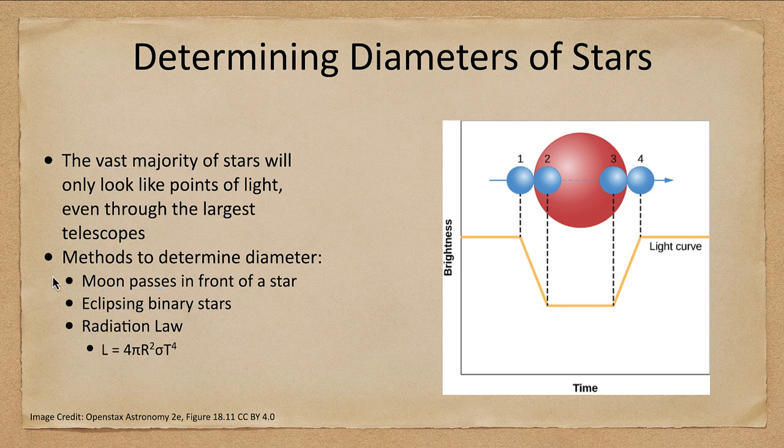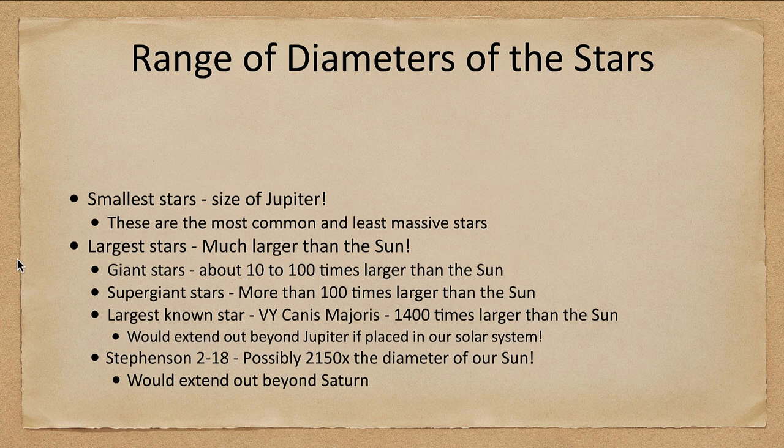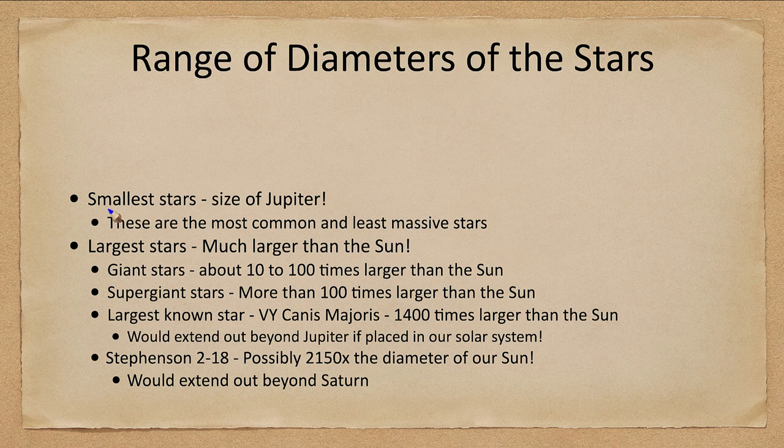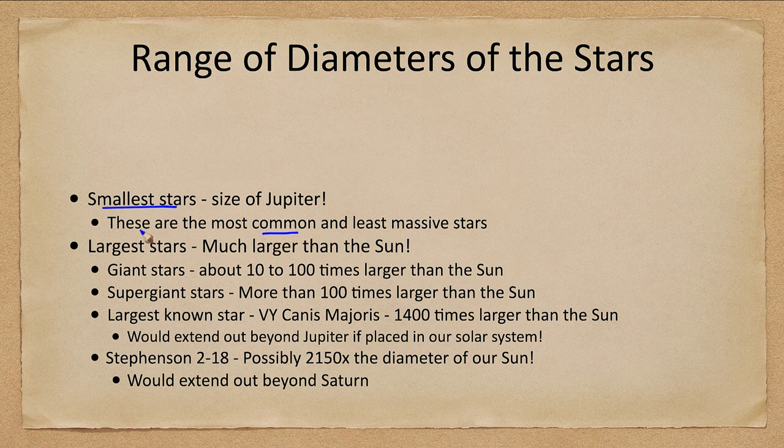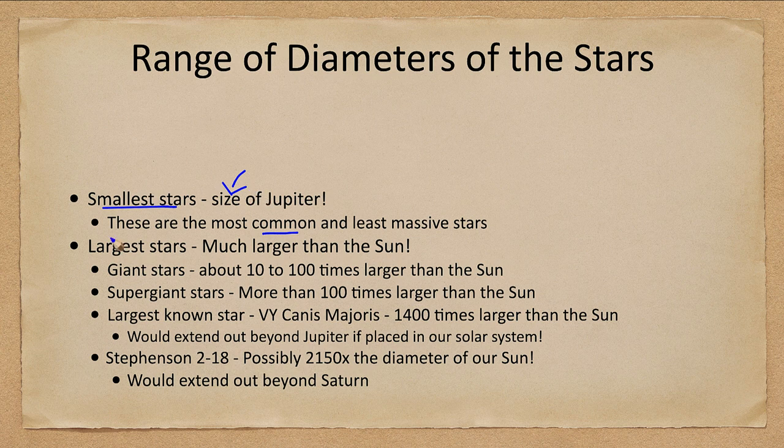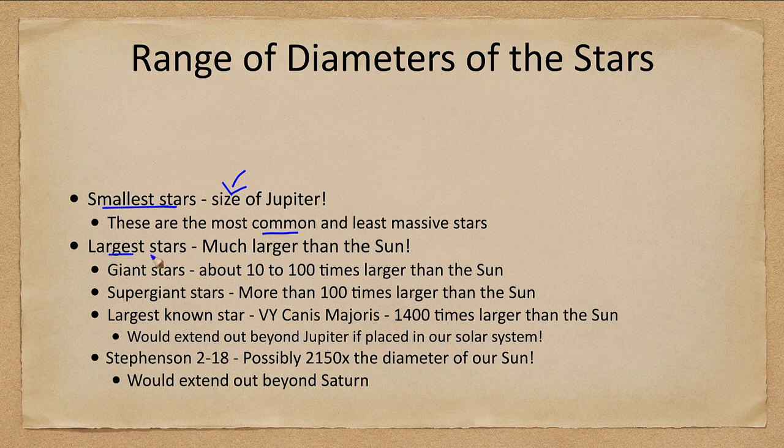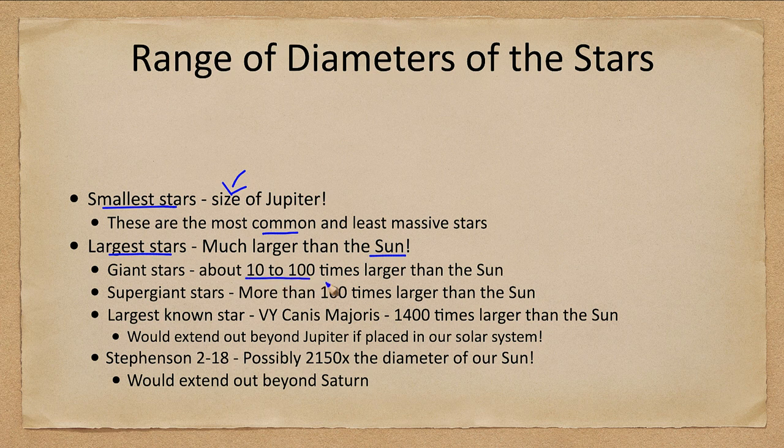Now what do we see when we look at the diameters of stars? The smallest stars are about the size of Jupiter. These are the most common stars that we see. Now they are the size of Jupiter, remember that is diameter, that is not mass. They are many times more massive than Jupiter. The largest stars are much larger than our sun. We have giant stars that are 10 to 100 times larger than the sun.